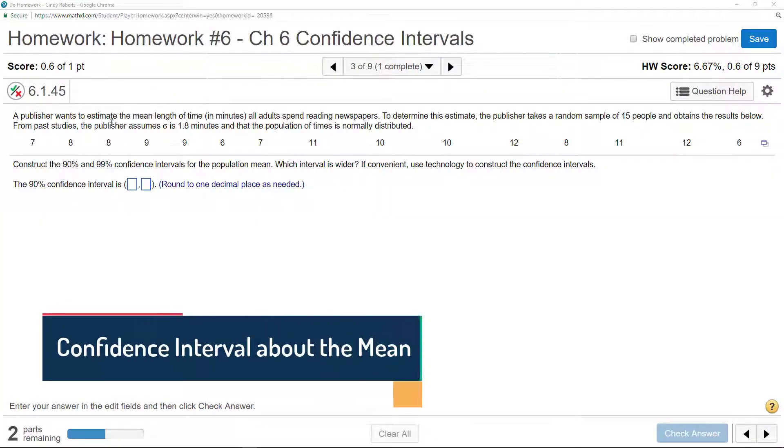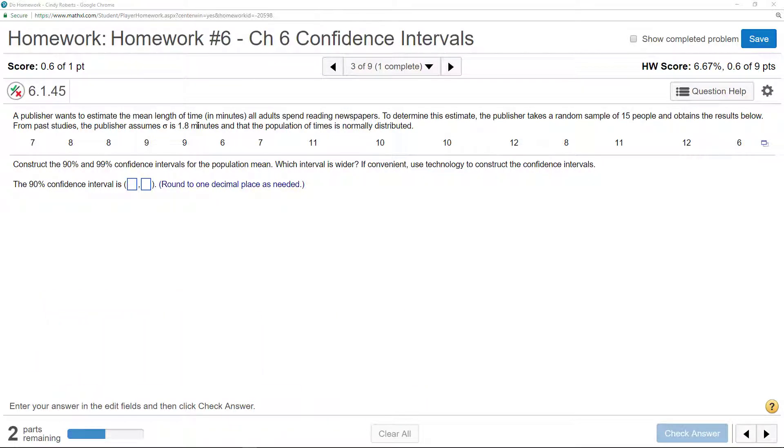Alright, what if you have a confidence interval where you're given data? So a publisher wants to estimate the mean length of time, so we're doing a confidence interval about the mean.